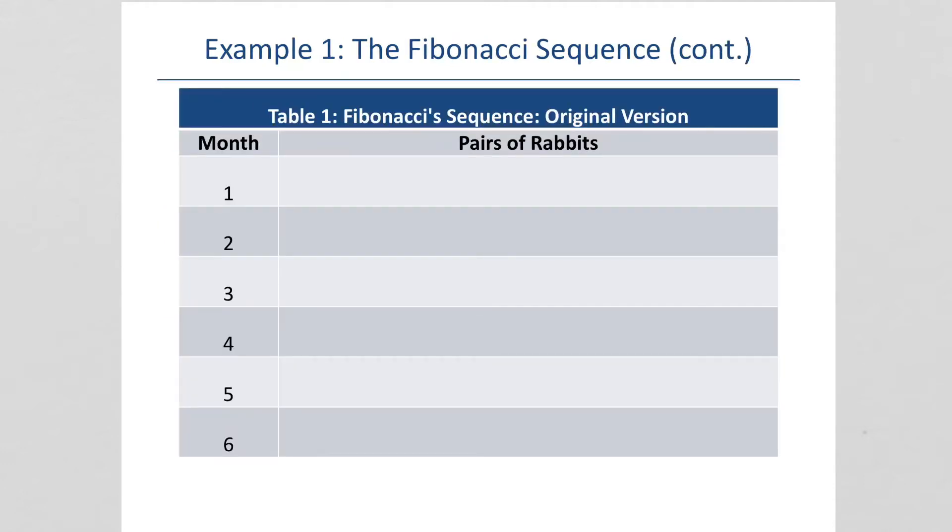Okay, so here's how it goes. The first month, this is our month here, we've got one pair, the original. The second month, we still have the original pair because we can't have babies until after two months.